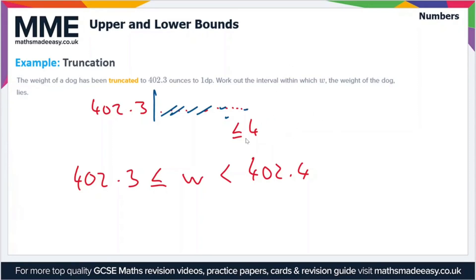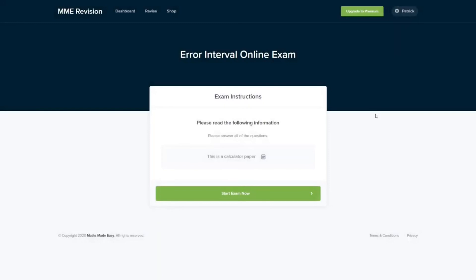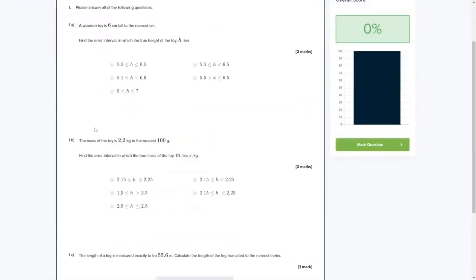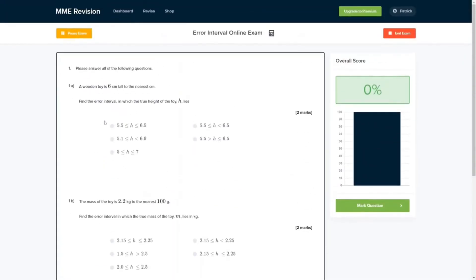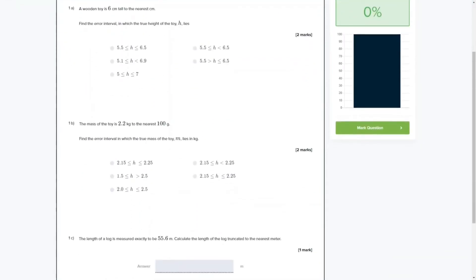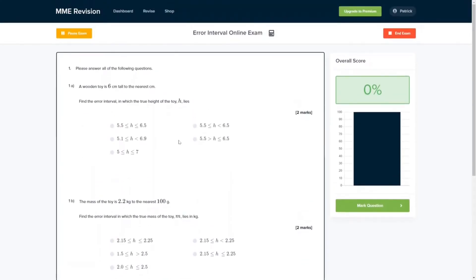If you want to get some practice in with error interval questions you can do so with our online exam. This is available through our revision platform where you'll find loads of different questions to have a go at. There's a variety of different question types and you'll get instant feedback on each and every one of them, so it's a really good way of keeping track of where your areas of weakness are, where your strengths are, and how you can improve your exams. If this is something you're interested in, you can click the link below and it will take you straight there.